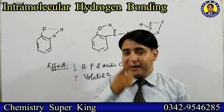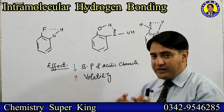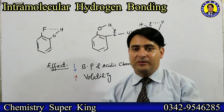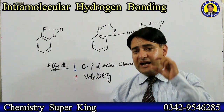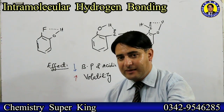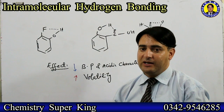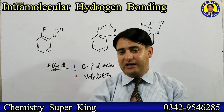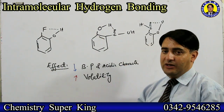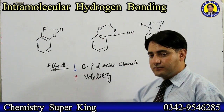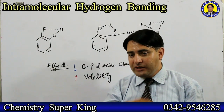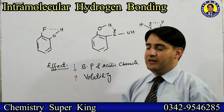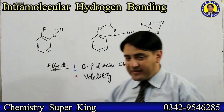Due to intramolecular hydrogen bonding, boiling point and acidic character decrease. Acidic character decreases both due to intramolecular and intermolecular hydrogen bonding. However, boiling point is higher with intermolecular hydrogen bonding and lower with intramolecular hydrogen bonding. When intramolecular hydrogen bonding is present, volatility is higher, whereas intermolecular hydrogen bonding reduces volatility.